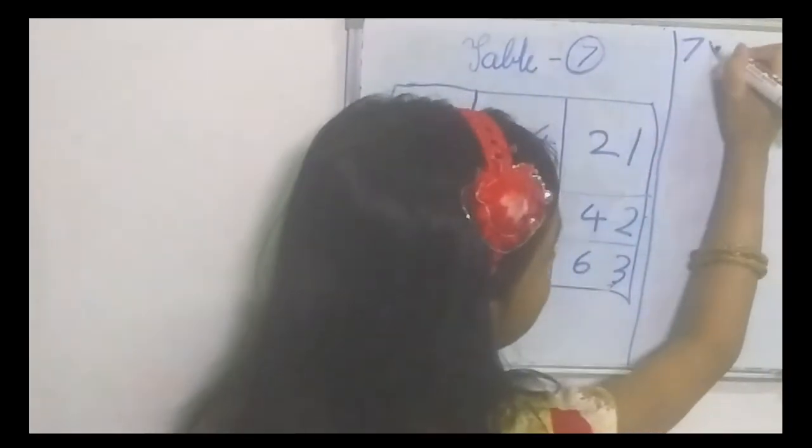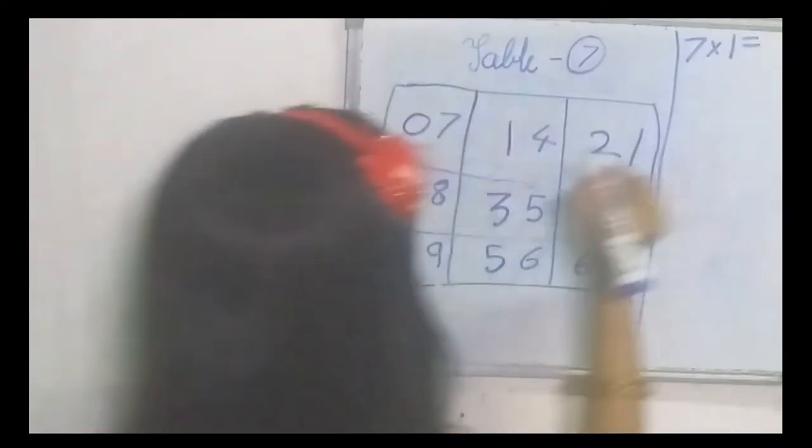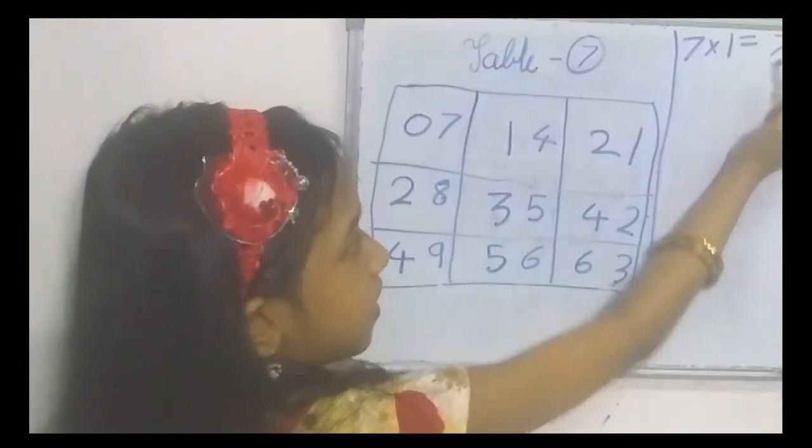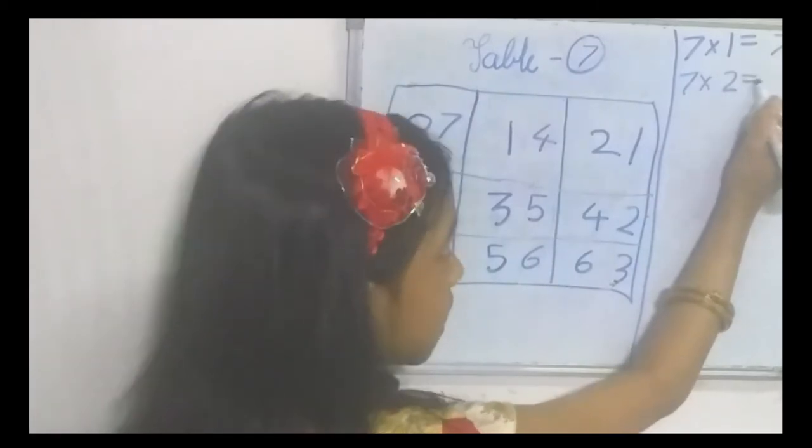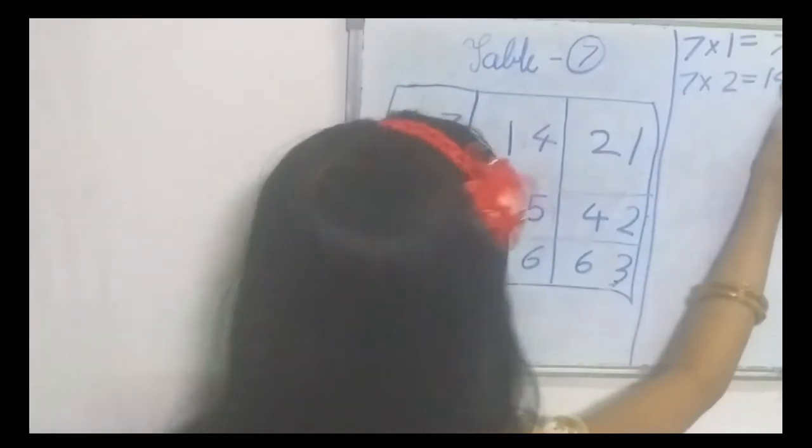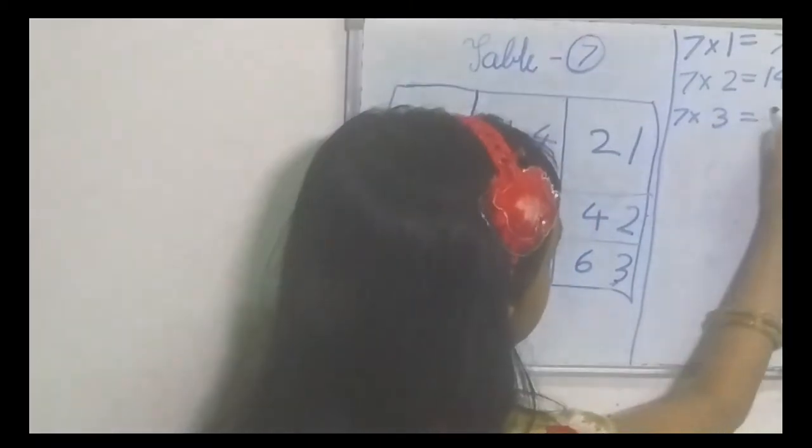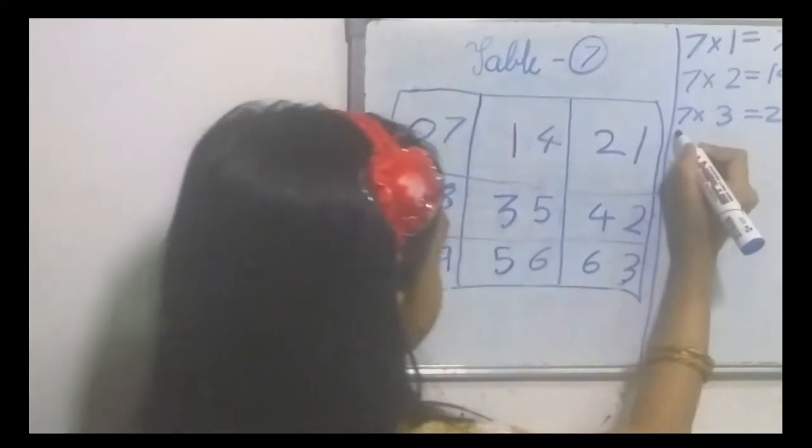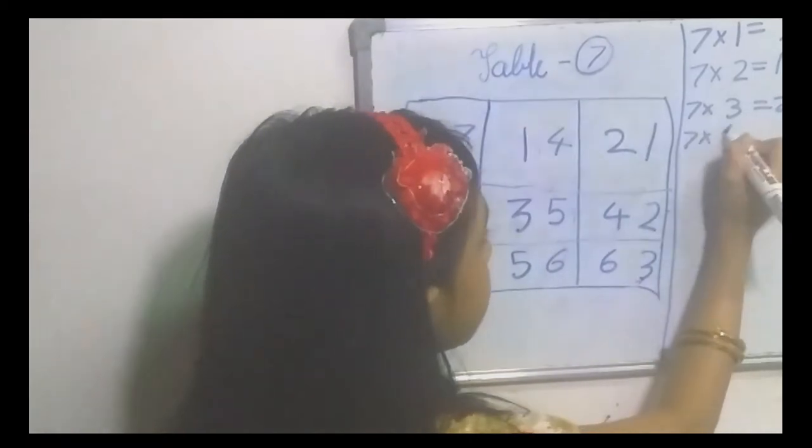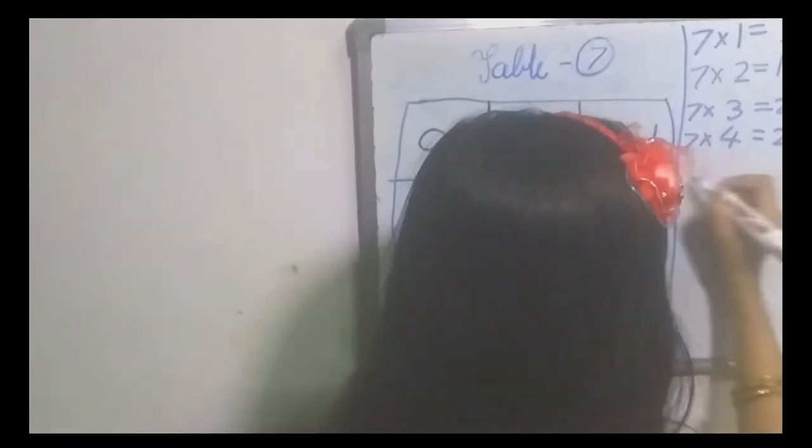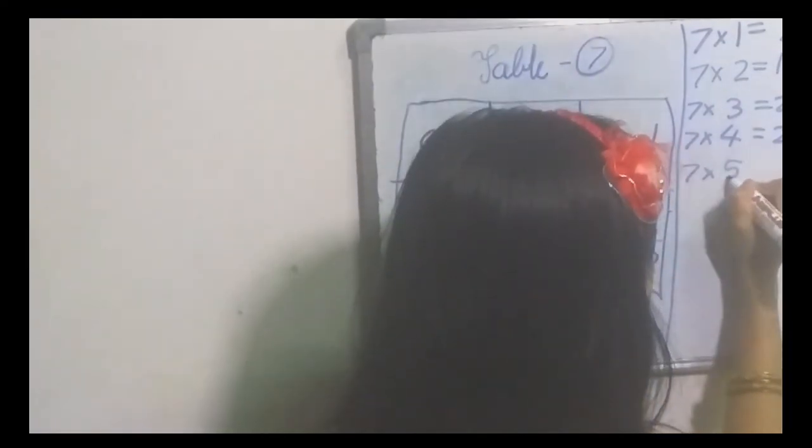Seven ones are seven. Seven twos are fourteen. Seven threes are twenty-one. Seven fours are twenty-eight. Seven fives are thirty-five.